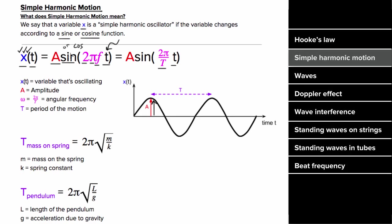How do you know whether to use sine or cosine? Sine starts at zero and goes up, and cosine starts at a maximum and goes down. So if you know the behavior of your oscillator at t equals zero, you can decide whether to use cosine or sine.